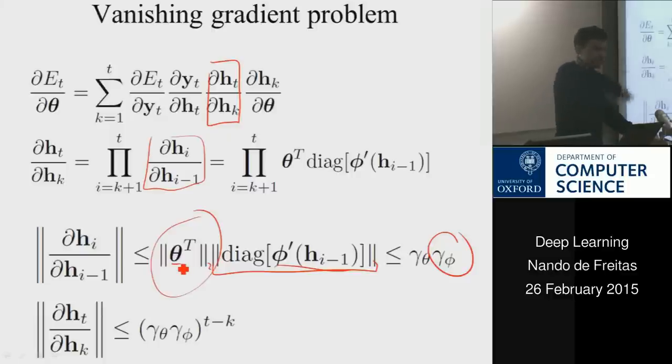Because let's assume that I pick some basis function so that its derivative is always upper bounded by some constant, say a half or something like that. Then if I look at the norm, I can also look at the L2 norm of this matrix of parameters.